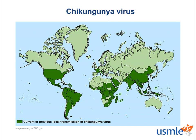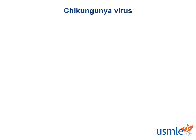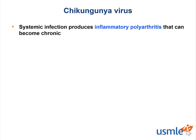Here we have a map of current or previous transmission of chikungunya virus. Compared to dengue virus, the map for chikungunya virus, while still concentrated in tropical regions, is a bit more widespread, especially in the Americas — reaching more of North and South America than dengue, but still very similar. Chikungunya virus is a systemic infection, and it does produce an inflammatory polyarthritis that can become chronic.